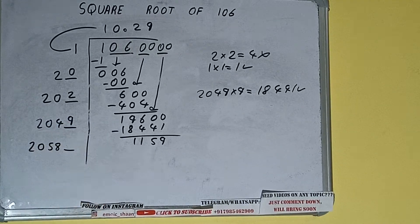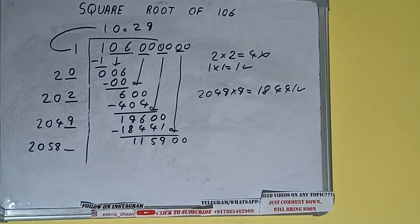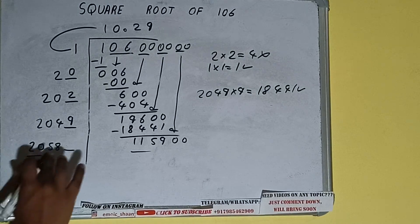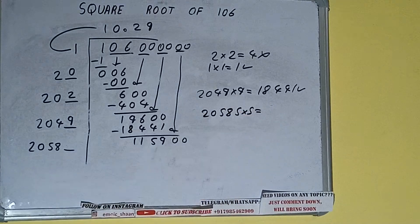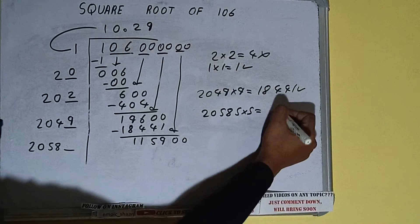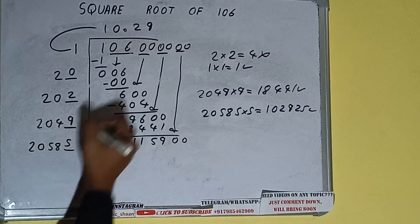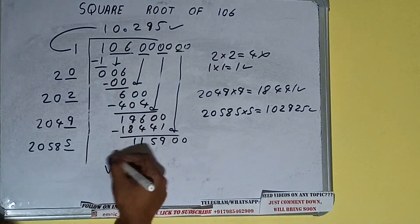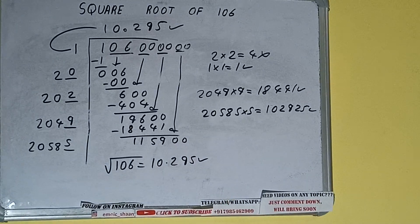This number needs to be made bigger, so bring the next pair of zeros down and it will be 115,900. Compare this 20 with 115 — 25 times is 100, so we can try 5: 20585 into 5 gives 102,925, which is good to take. So 5 here and 5 here. We don't need to calculate further because we have the answer correct to three decimal places. The square root of 106 is 10.295.